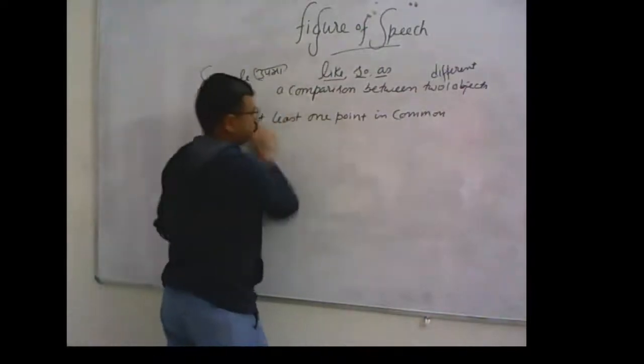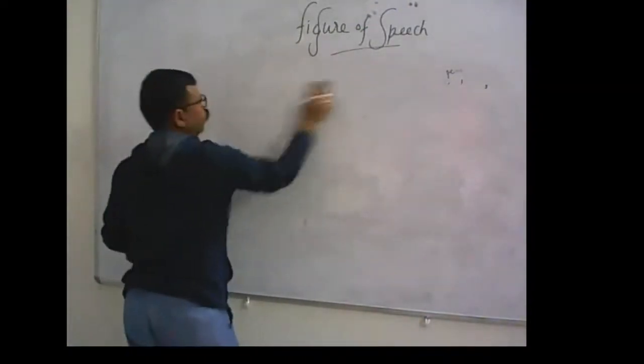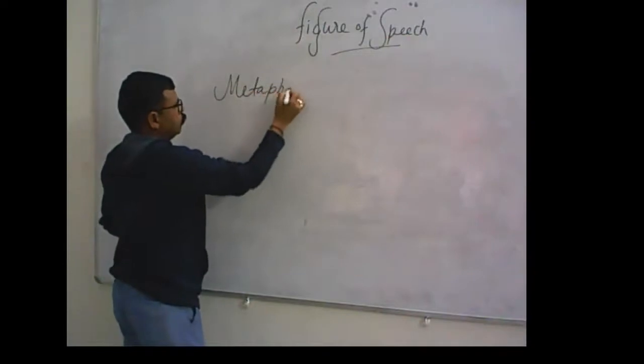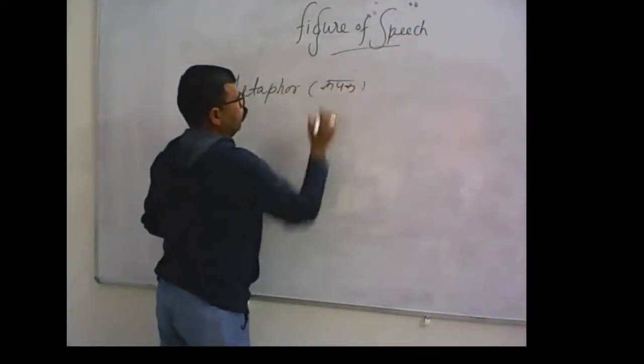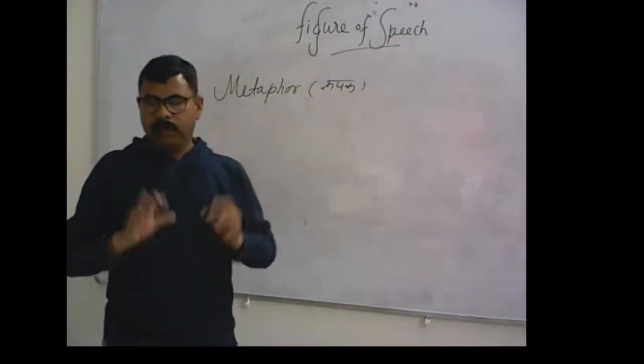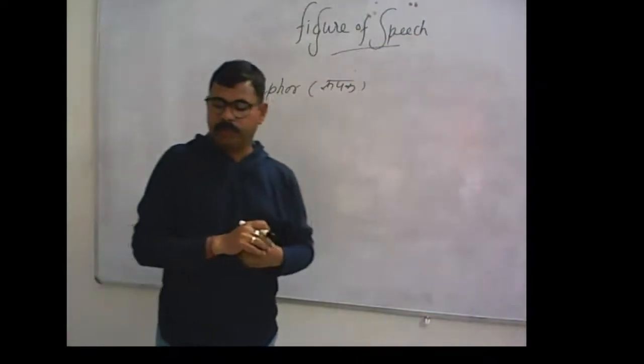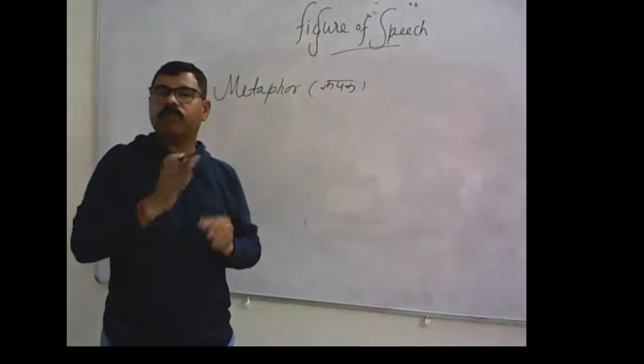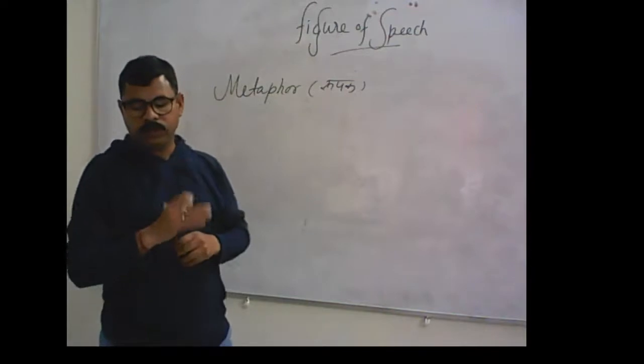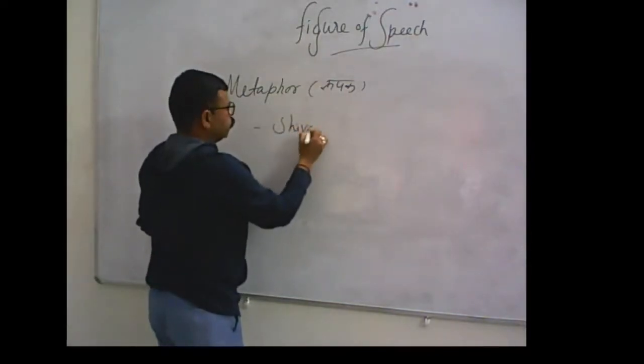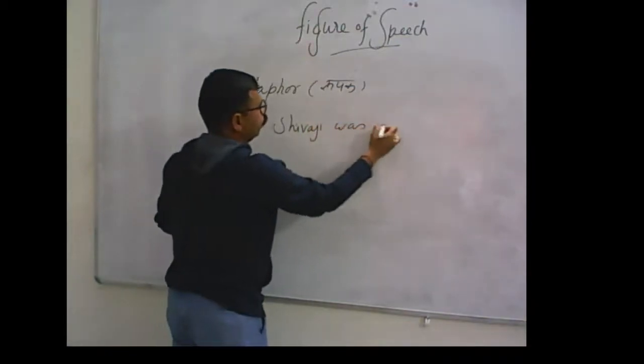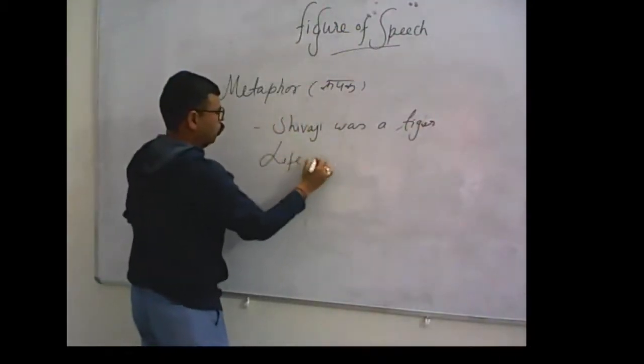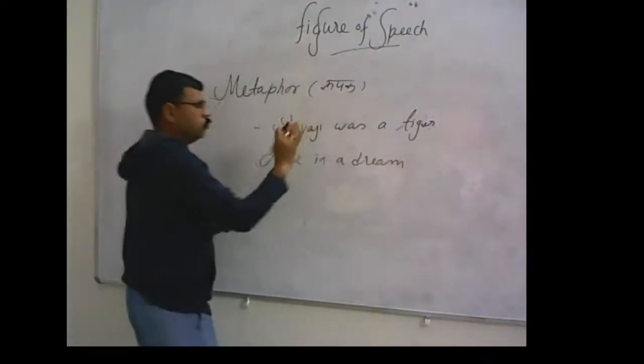Second one is metaphor. It is called in Hindi Rupak Alankar. In it, it is an implied simile. Words of comparison are not used. It is the same as simile, but the words of comparison like 'so' or 'as' are not used there.